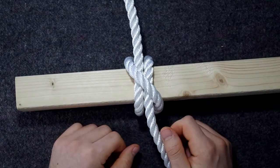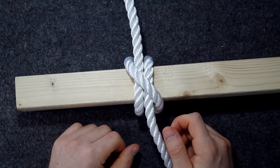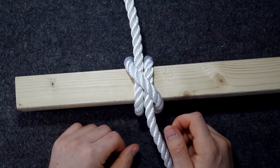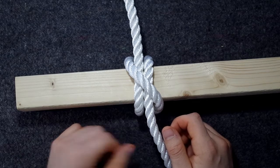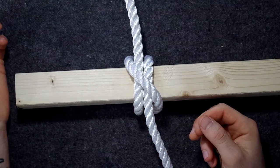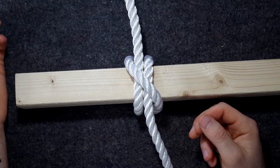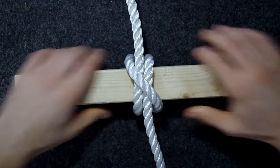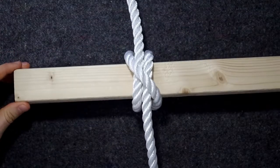For higher loads you should use a round turn and two half hitches or several round turns and two half hitches. I have no good experience of using too large a difference between the rope diameter and the pole diameter. I have a square piece of wood here which is not what it's best for.